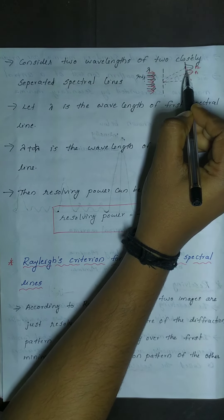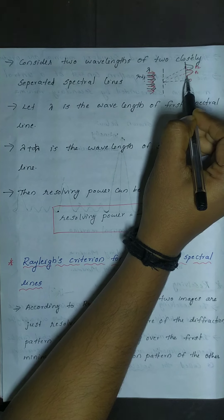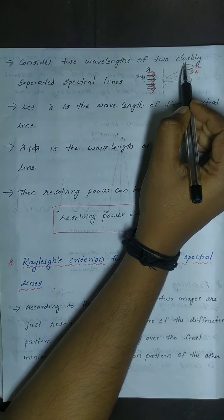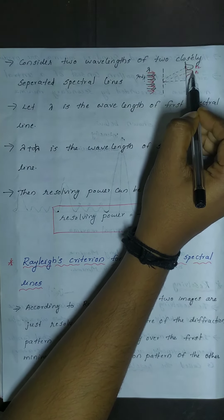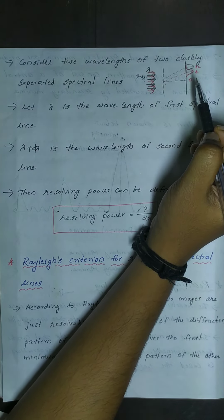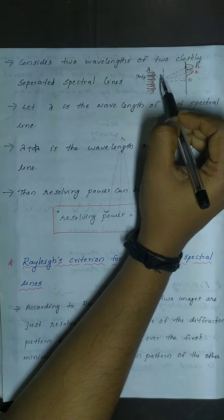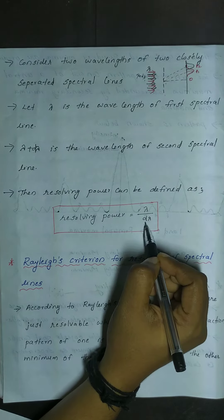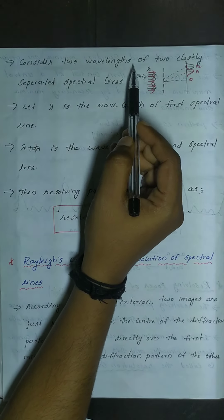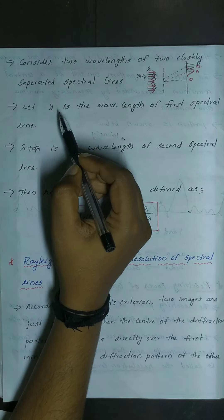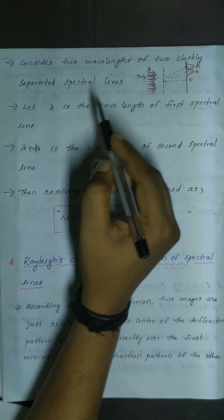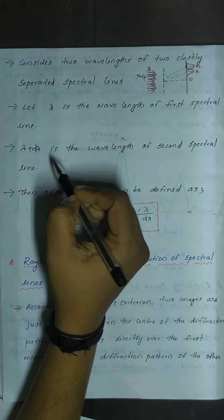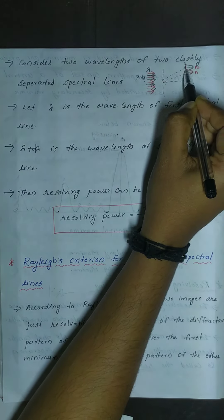Consider two wavelengths from a dimension. The two spectral lines are lambda and lambda plus d-lambda. Lambda is the wavelength of the first spectral line, and lambda plus d-lambda is the wavelength of the second spectral line — the red spectral line.